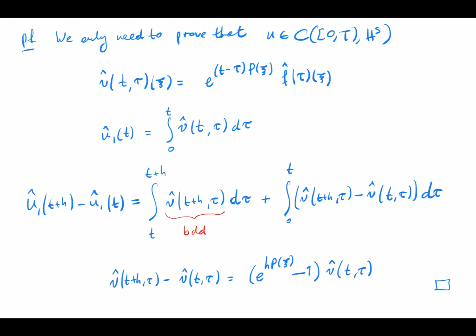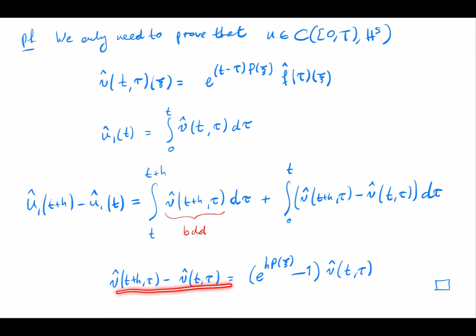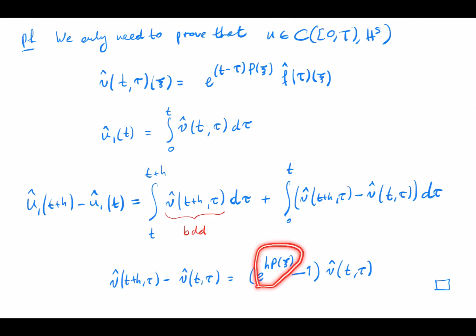For the first term, the integral is bounded because tau lies between t and t+h, so t minus tau is between zero and h. The interval length goes to zero as h goes to zero, so the first part goes to zero. For the second part, we write the integrand in a factored way and see that part also goes to zero as h goes to zero, because the matrix exponential satisfies an initial value condition with value equal to one. That shows continuity.